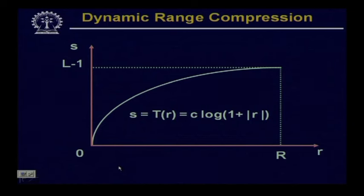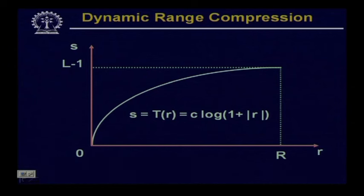Here, r is the intensity of a pixel in the original image and s is the intensity in the processed image. The relation is s = T(r) = c * log(1 + |r|), where c is a constant that must be decided depending on the dynamic range of the display device and the input image. We use log(1 + |r|) because when r equals 0, log(0) is not defined. Taking c * log(1 + |r|) gives compression of the dynamic range so the image can be properly displayed on a device with limited dynamic range.